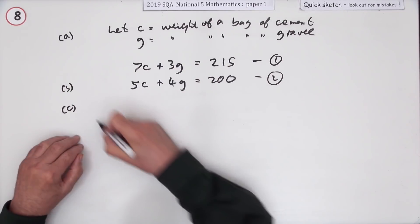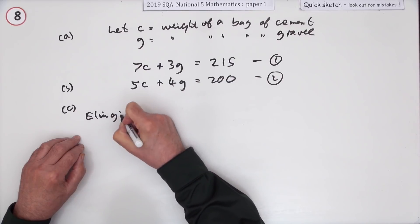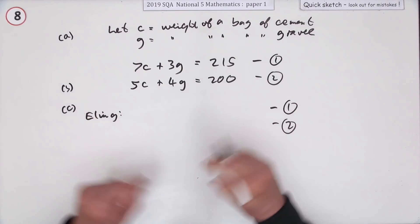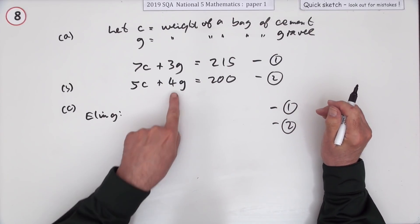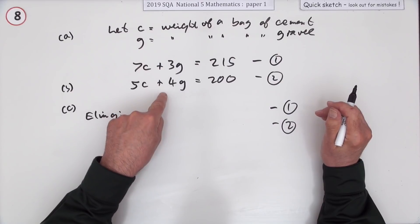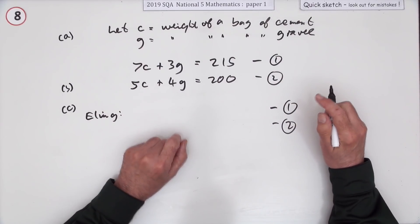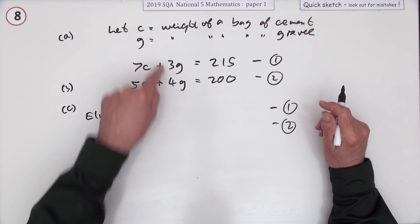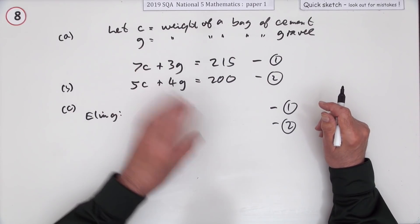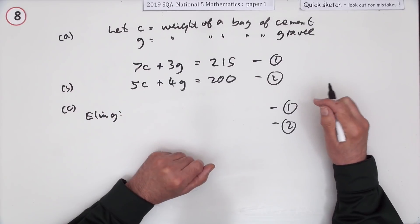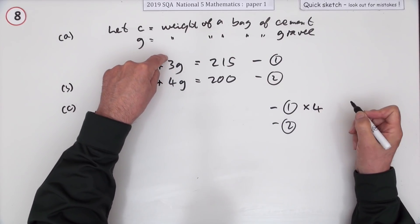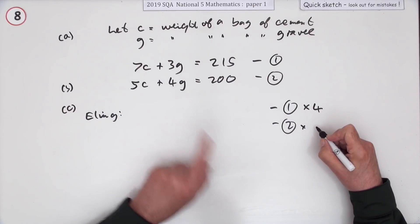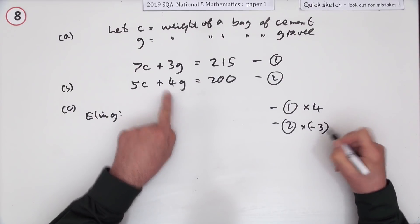I think I'll get rid of G. I'm going to eliminate G and I like to have a little plan in advance. In order to eliminate G I want them to be the same. I'm going to have to do four of these to make 12 and three of these to make 12, but I think when I do three of these I'll multiply by negative 3 so I'm just adding in the end.